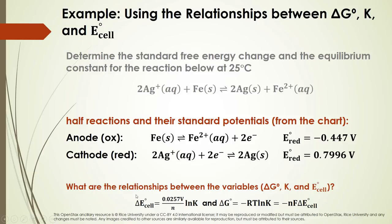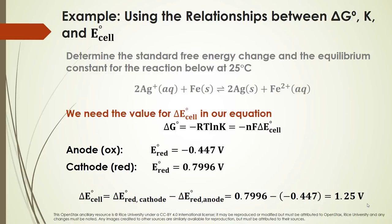Using the equations relating our variables, let's calculate the cell potential. E°_cell equals the standard reduction potential of the cathode minus that of the anode: 0.7996 minus (−0.447). Since subtracting a negative makes the term positive, adding them gives us E°_cell equals 1.25 volts.